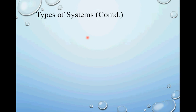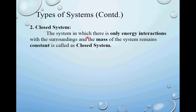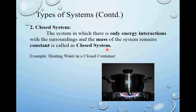The second type is a closed system. The system in which there is only energy interaction with the surroundings and the mass of the system remains constant is called a closed system. Example: heating water in a closed container. I have taken the same example but with a small difference — the container is covered with a lid.